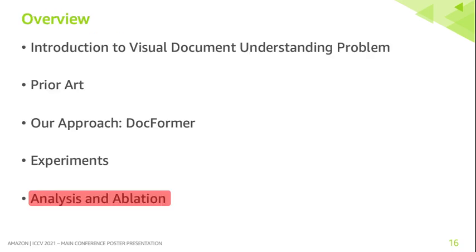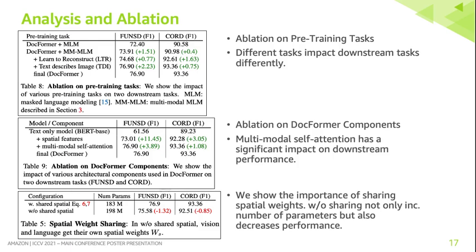Finally, let's look at the ablation and analysis section. Table 8 shows ablation on various pre-training tasks. We can see that all pre-training tasks have an impact on downstream task performance, and different tasks impact different downstream datasets differently. Table 9 shows the ablation on Docformer components, where we clearly see that multimodal self-attention has a significant impact on downstream performance. Table 5 shows ablation on shared spatial weights, where we can clearly see that sharing spatial weights helps the model correlate features across modalities — vision and language.